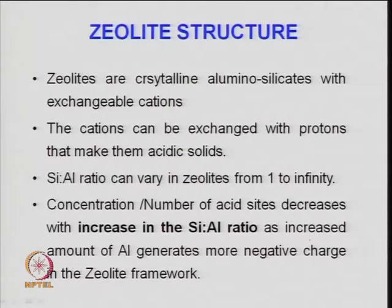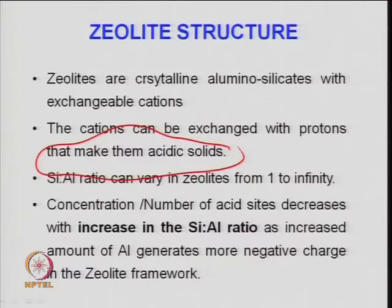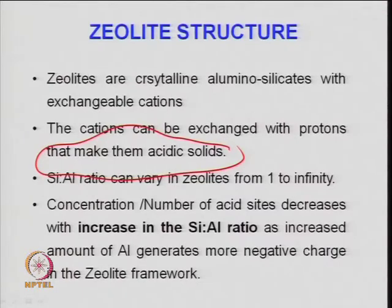Zeolites are crystalline aluminosilicates with exchangeable cations. The cations can be exchanged with protons, making them acidic solids. They have the ability to exchange cations — both cation and anion exchange is possible. Calcium, sodium, protons (H-ZSM-5), gallium, or ammonium can be exchanged into zeolite, giving different types of zeolite materials.